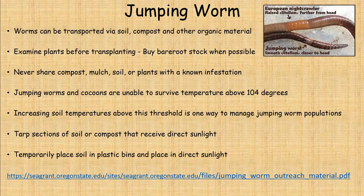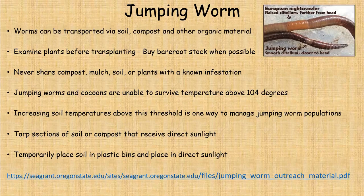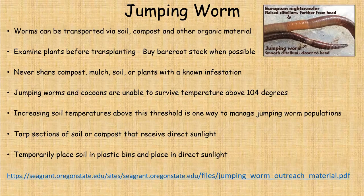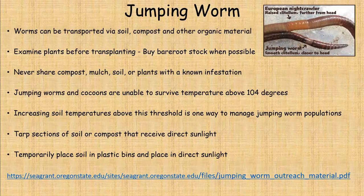Never share compost, mulch, soil, or plants if you know you have an infestation of jumping worms. Jumping worms and their cocoons cannot survive temperatures above 104 degrees. If you have an area in your garden where these jumping worms are present, try increasing soil temperatures above this threshold — tarp a section of soil or compost in direct sunlight to kill off the cocoons and worms, or temporarily place the soil in plastic bags in direct sun to get the temperature much higher.